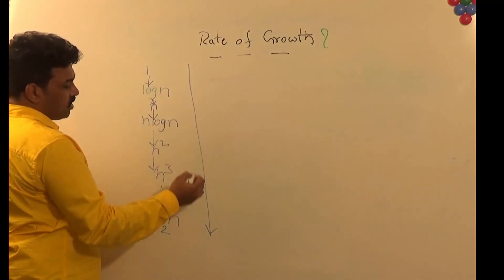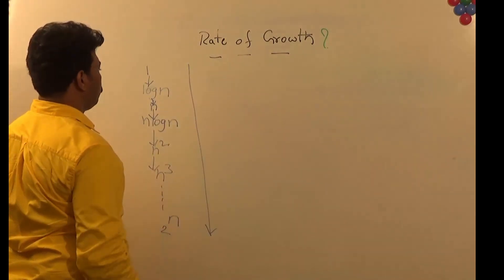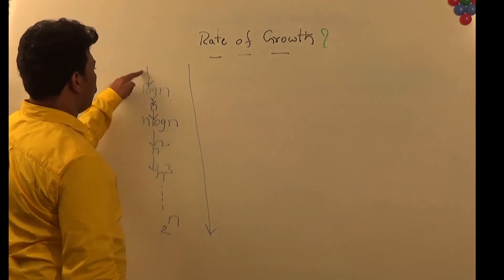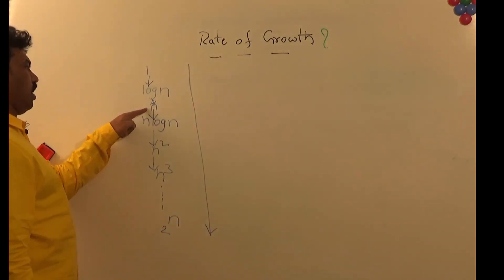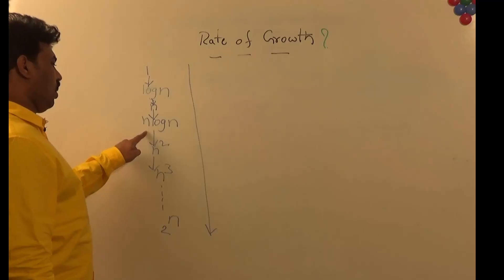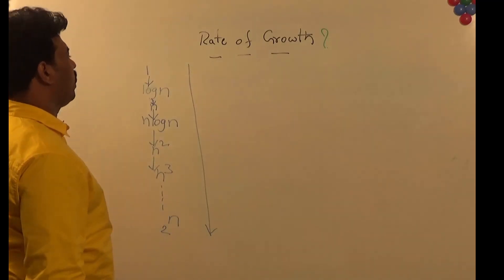Let us see some commonly used rate of growths we will use throughout our discussions. These rate of growths are arranged in increasing order: 1 is less than log n, less than n, less than n log n, n squared, n cubed, and 2 to the power n.